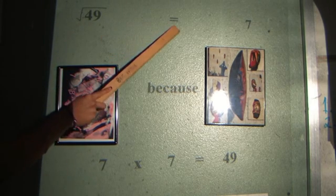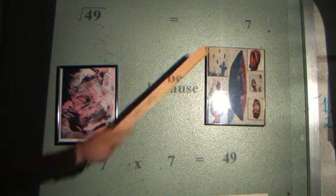The square root of 49 equals 7, because 7 times 7 equals 49.